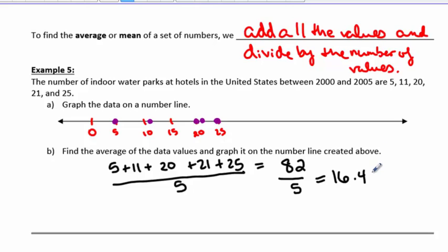So the average value is 16.4. So to graph this on the number line, we know where 15 is. 16 would be right next to it. 16.4 is halfway between 16 and 17. So this is where our average is going to be.